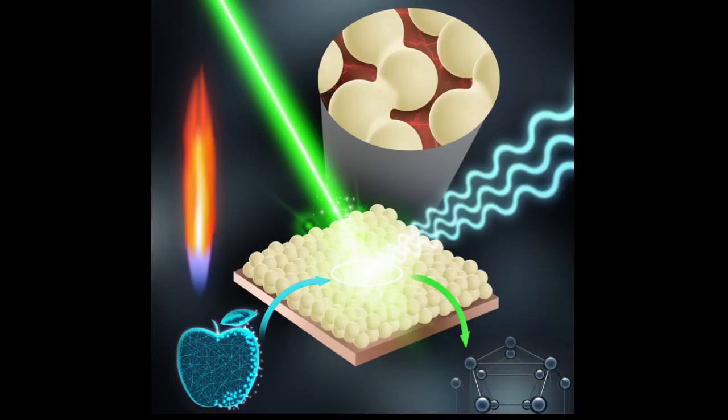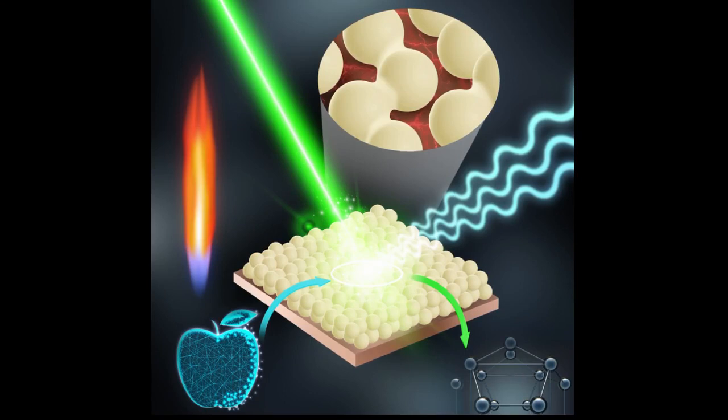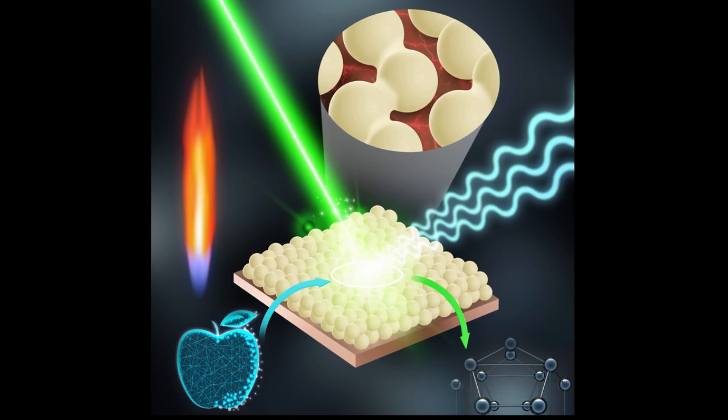To test the sensors' practical application, the researchers calibrated them to detect low concentrations of parathionethyl, a toxic agricultural insecticide that is banned or restricted in most countries.